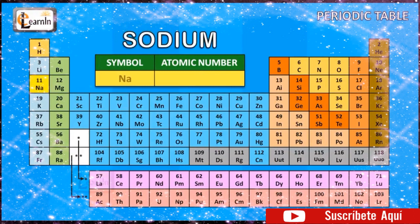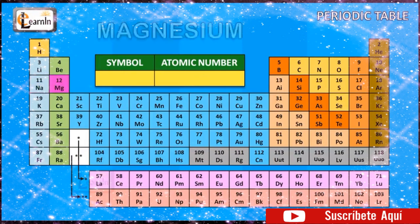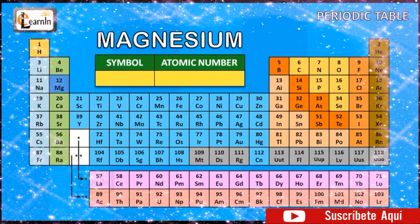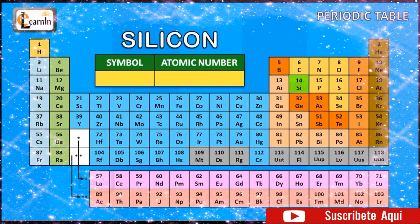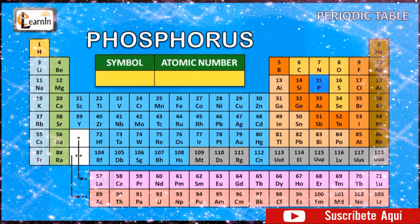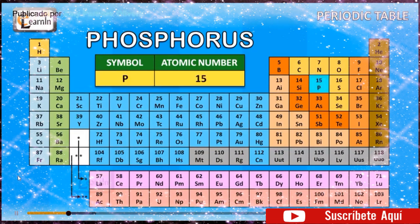The element sodium is represented as Na and has an atomic number of 11. The element magnesium is represented as Mg and has an atomic number of 12. The element aluminum is represented as Al and has an atomic number of 13. The element silicon is represented as Si and has an atomic number of 14. The element phosphorus is represented as P and has an atomic number of 15.